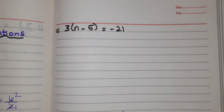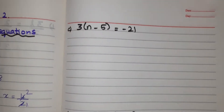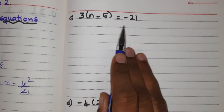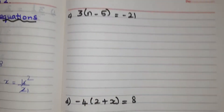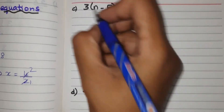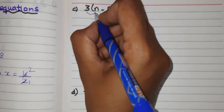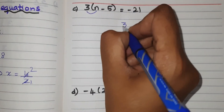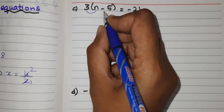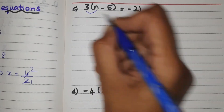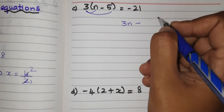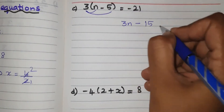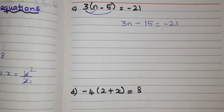Next, the third problem: 3 into (n minus 5) equal to minus 21. First, remove the bracket. Multiply 3 into n — that becomes 3n. Then, what's the symbol? Minus. Next, 3 into 5 — 3 fives are 15. So 3n minus 15 equal to minus 21.